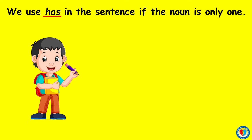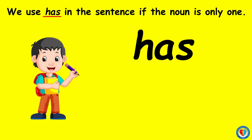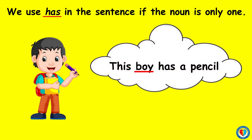Look at this picture. This boy is holding a pencil. How many boys do you see? Yes, he's only one. And because he's only one, we are going to use has. This boy has a pencil. In this sentence, we use has because he's only one.